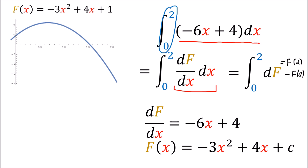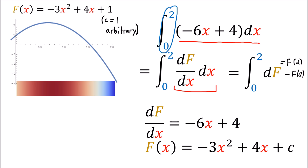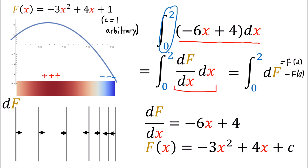Since df/dx equals negative 6x plus 4, to get f(x) we compute the antiderivative: negative 3x squared plus 4x plus some constant c. If we want to visualize f, we could draw it as a curve. It doesn't really matter what the constant c is, so I'll just pick c equals 1 arbitrarily. Here f is visualized as a curve on a pair of axes, but we could also visualize f as a scalar field, where red indicates positive values and blue indicates negative values.